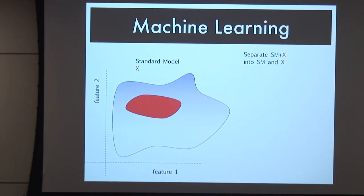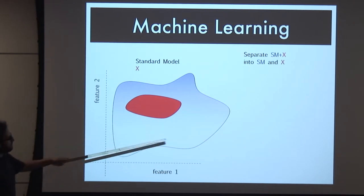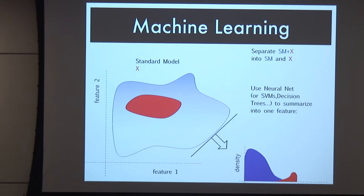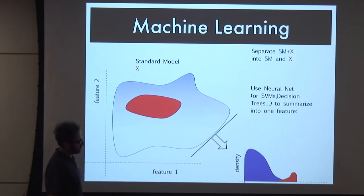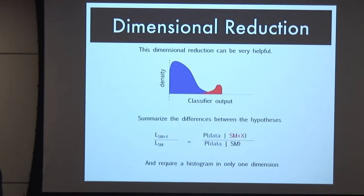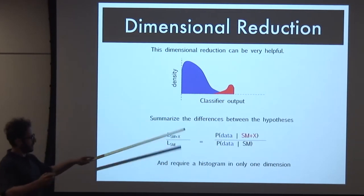So where does machine learning come in? This is the role of machine learning: to solve this problem by doing dimensional reduction. Imagine some high-dimensional space where your signal is embedded among the standard model. We want to ask machine learning: could you boil all this information down into a one-dimensional distribution? Because I can handle using simulation to describe the shape of a one-dimensional distribution, and then we can do this calculation using our standard tools.